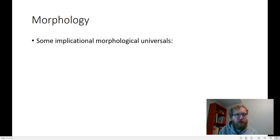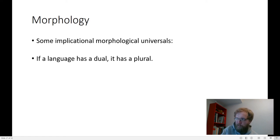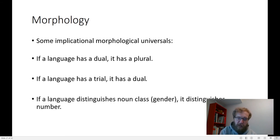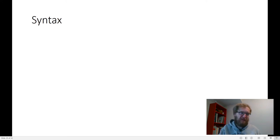There are some good implicational morphological universals when it comes to morphological typology. For instance, if a language has a dual, then it has to have a plural. There's no languages that only have a singular and a dual. And if a language has a trial, that's a special suffix that only refers to three things, then it also has a dual. There's no languages that just have a singular and a trial, or a singular and a plural in the trial. If a language distinguishes between different noun classes or genders, then it'll also distinguish number. There are no languages that only distinguish noun class or gender and don't distinguish singular and plural.